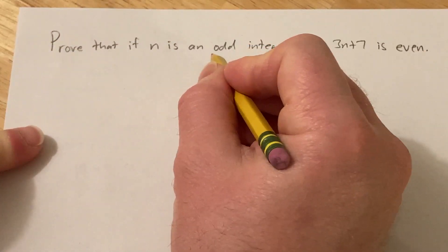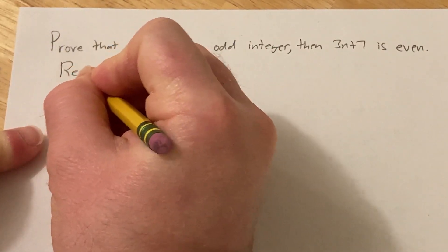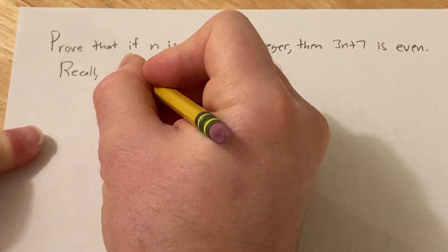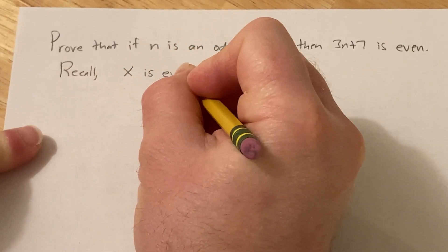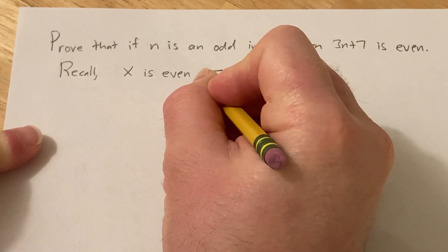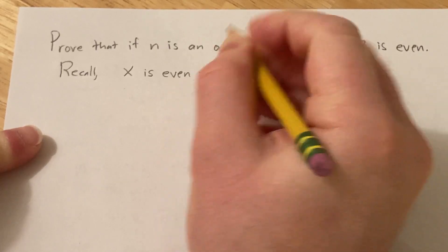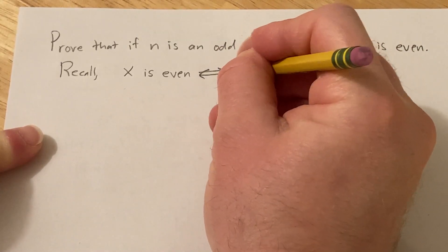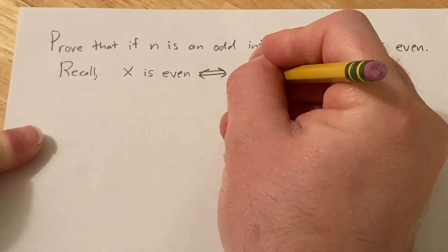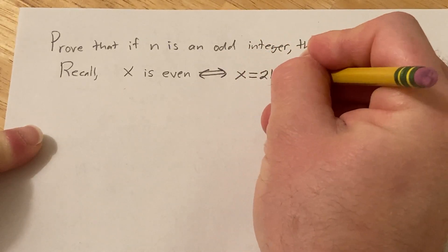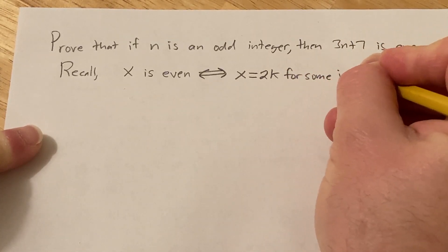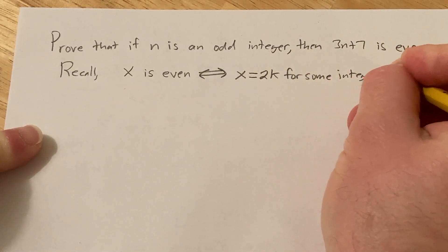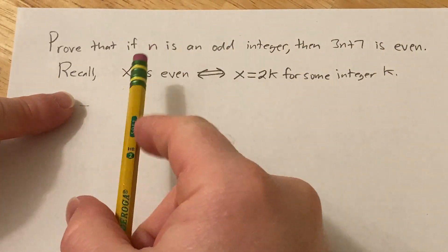Before we do this proof, we need some definitions. So recall that we say that x is even, and this is equivalent to saying that x is a multiple of 2. So basically you can write this as x equals 2k for some integer k. So that's the definition of even.